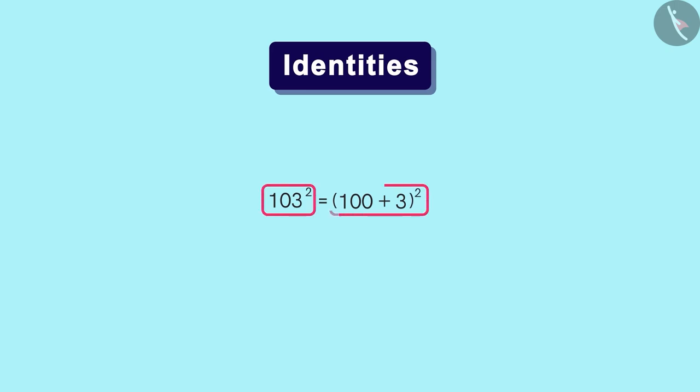But why did we split it into 100 and 3? Basically, 100 plus 3 square will be like this. We can see that it is very easy to find the values of 100 square and 3 square, and it is also easy to find the value of this term. Therefore, we will get this as the answer.